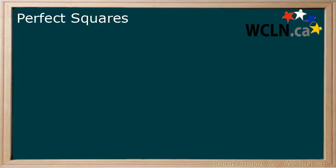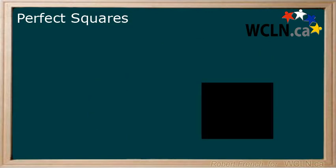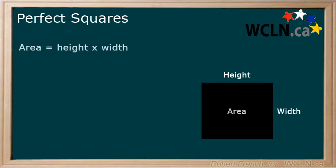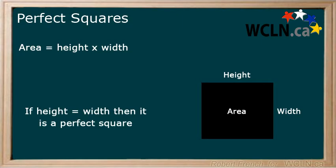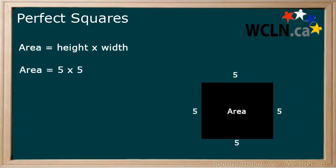I want to look at this one other way quickly — you may have already made this connection. Why is a perfect square called a perfect square? When measuring a square, we can measure its height and width. To get the area, we multiply height by width. When the height and the width are the same, we call this a perfect square. You can think of this square as perfect because every side is the same. In this example, let's make every side 5. Our height multiplied by width becomes 5 multiplied by 5, which equals 25. 25 is a perfect square.